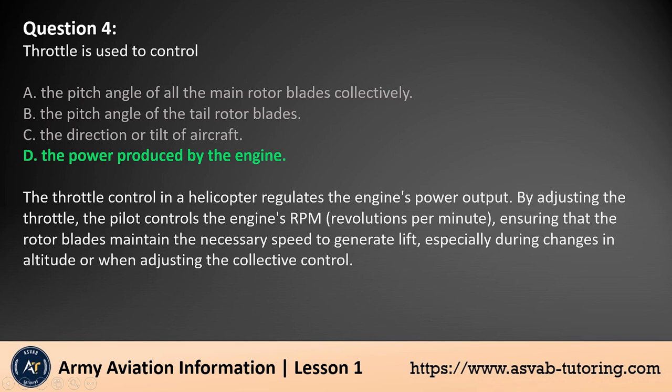The throttle control in a helicopter regulates the engine's power output. By adjusting the throttle, the pilot controls the engine's RPM (revolutions per minute), ensuring that the rotor blades maintain the necessary speed to generate lift, especially during changes in altitude or when adjusting the collective control.